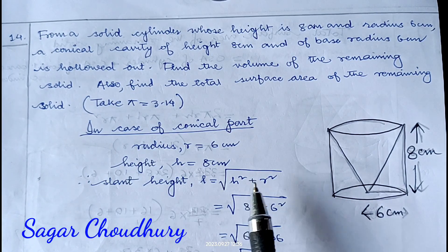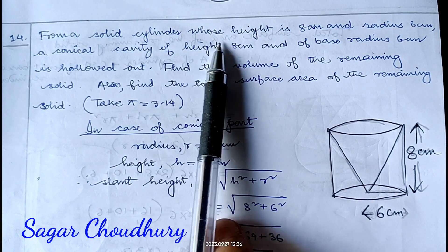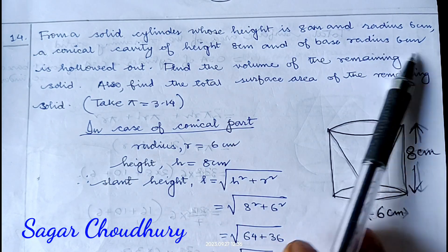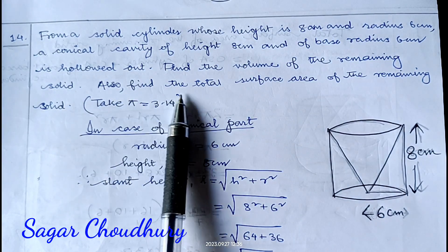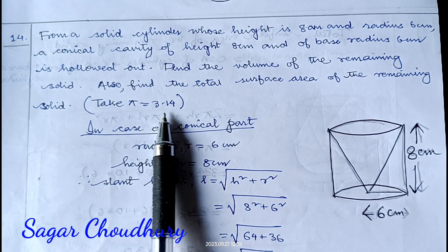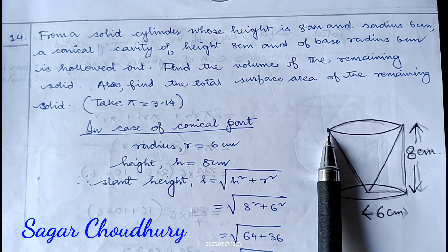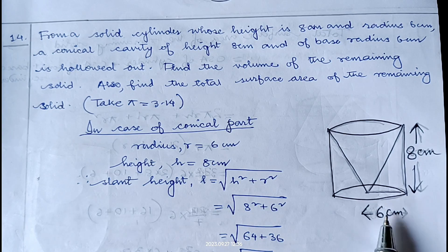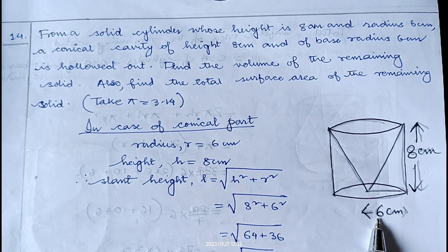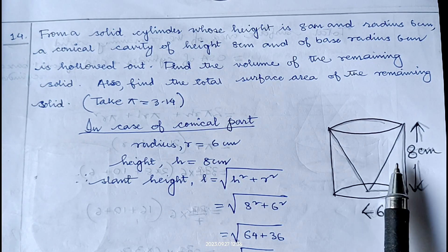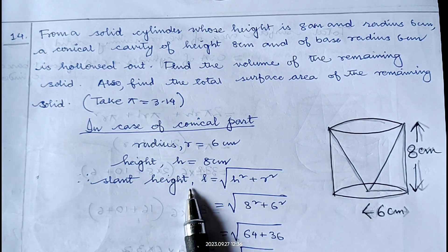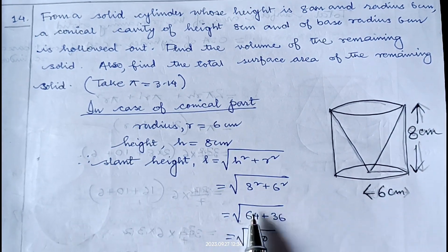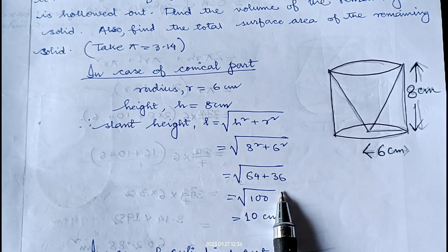Question number 14: from a solid cylinder of height 8 centimeter and radius 6 centimeter, a conical cavity of the same height and base radius 6 centimeter is hollowed out. Find the volume and total surface area of the remaining solid, taking pi equal to 3.14. The conical part has radius 6 and height 8. Slant height l equals root over (8 squared plus 6 squared) equals root over (64 plus 36) equals root over 100, so l equals 10 centimeter.